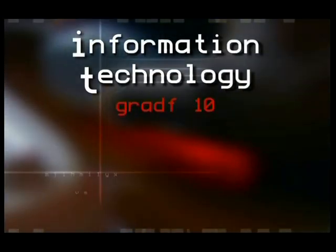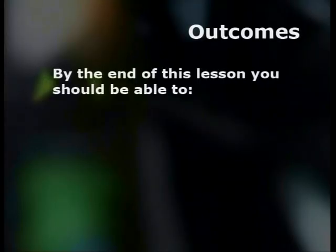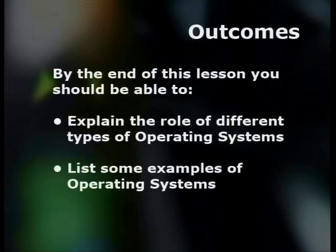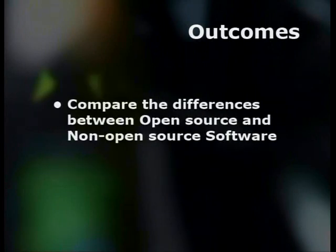Welcome to the fourth lesson in the series on software. In our last two lessons, we focused on the main differences between application software and system software. We looked at the importance of having an operating system installed on your computer, as well as some of the functions it performs. Today, we will focus on different types of operating systems and the role they play in the computer environment. By the end of this lesson, you should be able to explain the role of different types of operating systems, list some examples of operating systems, and compare the differences between open source and non-open source software.